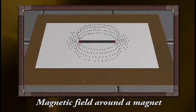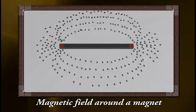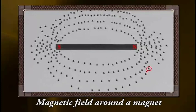Isn't it amazing? This is because each piece of iron filings becomes a small magnet and experiences a force in a certain direction in the space around the magnet.